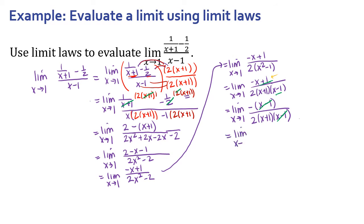I'm left with the limit as x approaches 1 of negative 1 all over 2 times x plus 1. Now I'm not in indeterminate form anymore — I can actually evaluate this limit. It's a rational function, polynomial divided by polynomial. Let me check: substituting 1 gives 2 times 2, which is 4 in the denominator — that works. So substituting 1 in, I get negative 1 over 2 times 2, which is negative one fourth. That took a lot of steps, but it made it so we could evaluate a function we couldn't before.